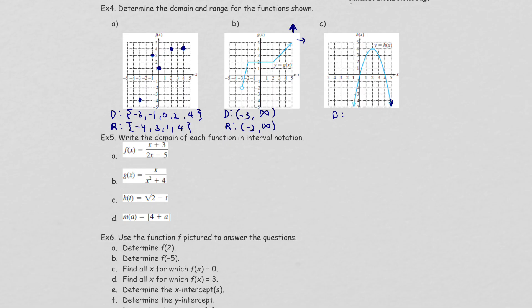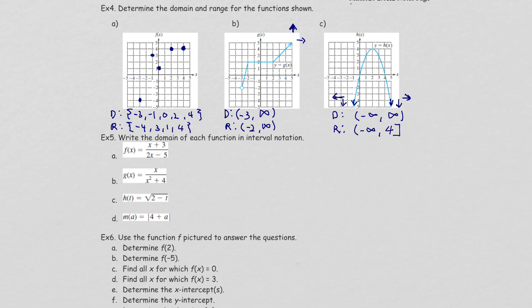For an upside-down parabola: I look at the arrows first. The left arrow goes down and slightly left, the right arrow goes down and slightly right — so left and right arrows mean the domain covers all of negative infinity to positive infinity. For range, the arrows go downward, so range goes to negative infinity. The highest point is at y = 4 with no open circle, so 4 is included — use a bracket. Range is negative infinity to 4 (inclusive).